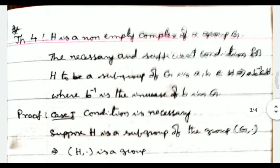Next theorem — this is a very important exam point. A non-empty subset H of a group G: the necessary and sufficient condition for H to be a subgroup of G is that a, b belongs to H implies ab inverse belongs to H, where b inverse is the inverse of b in G.